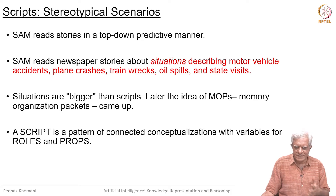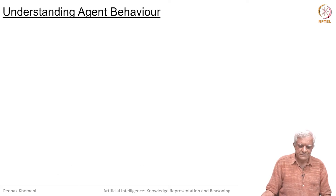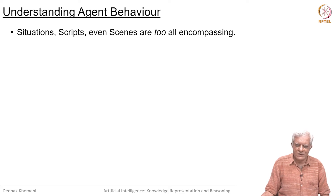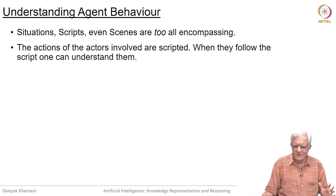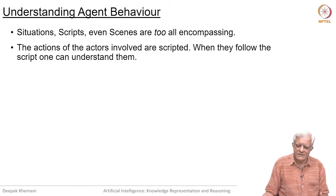You have to map the incoming characters in a story to these roles and props, and each script provides pre-stored expectations about what will be read. Now we want to look at those stories where we have to figure out what the agents or characters in the story are up to. Situations, scripts, and even scenes are all too encompassing — they capture huge stereotypical scenarios, and only if the scenario matches the story do they work. The actions of the actors involved are scripted, and when they follow the script, one can understand the story.